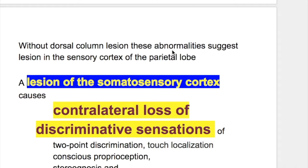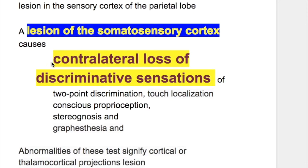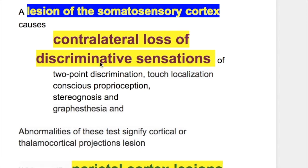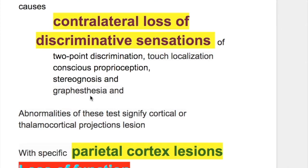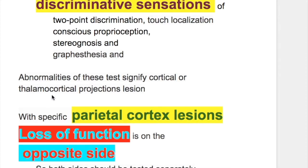Without a dorsal column lesion, these abnormalities suggest a lesion in the sensory cortex of the parietal lobe. A lesion of the somatosensory cortex causes contralateral loss of discriminative sensation including two-point discrimination, touch localization, conscious proprioception, stereognosis, and graphesthesia. Abnormalities of these tests signify a cortical or thalamocortical projection lesion.